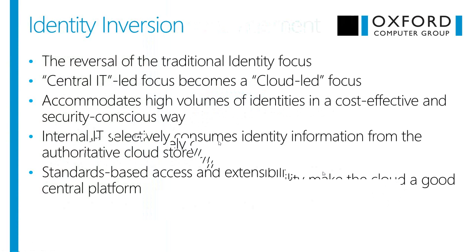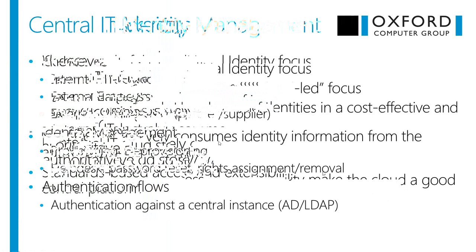The classic scenarios we work with in central IT include internal employees, external or part-time employees and contractors, and external collaboration scenarios — working with partners or suppliers who need access to shared content from outside the private network. Quite commonly, if we want to do authentication for external users, we try to have some sort of central instance — an Active Directory or LDAP server — providing a central authentication instance. Historically, this is how central IT has managed identity management.